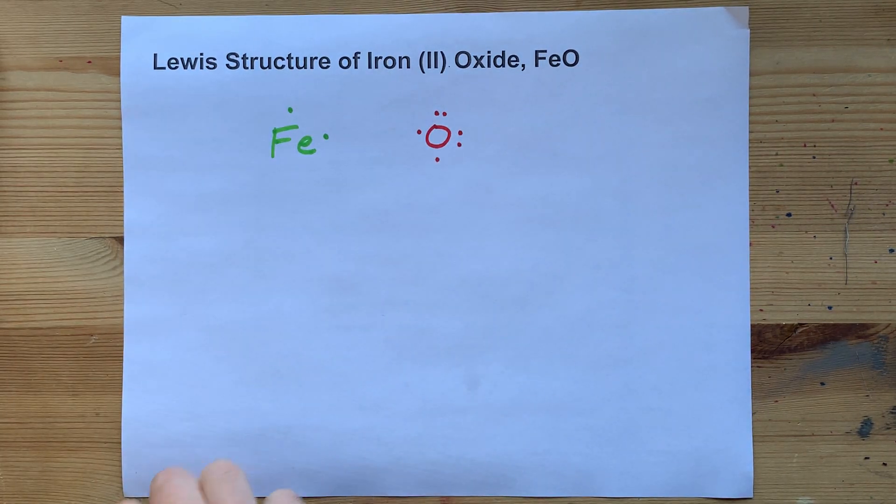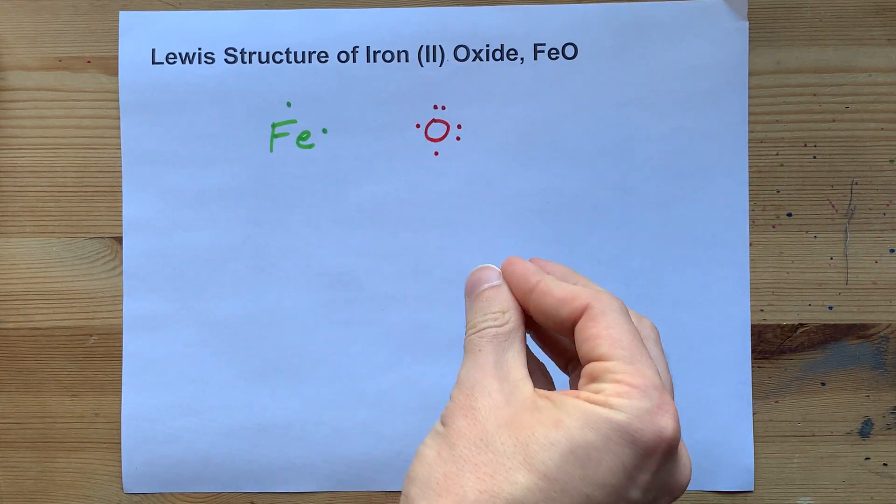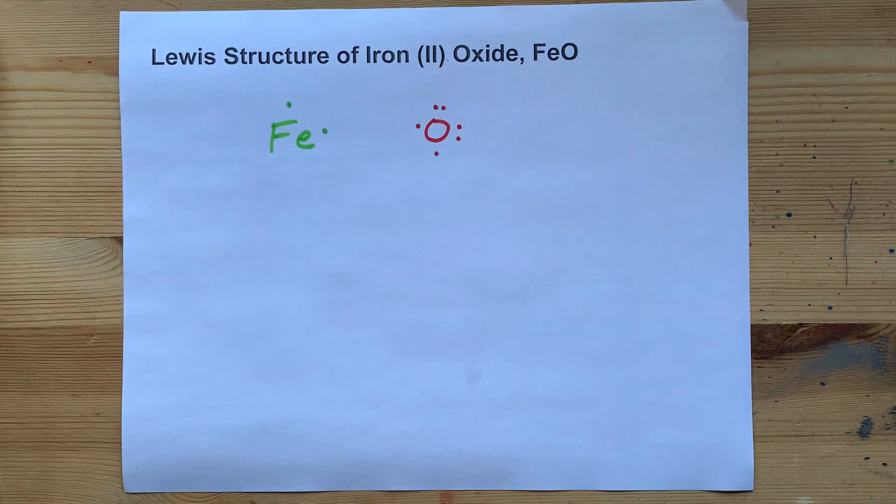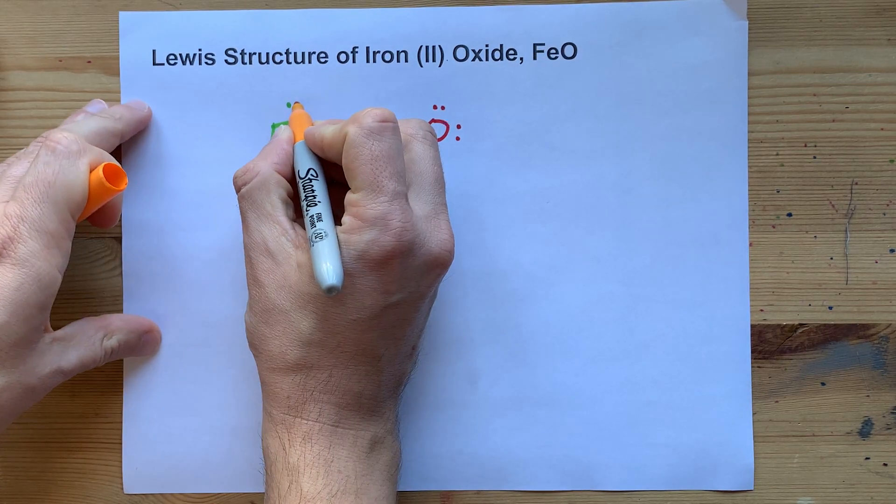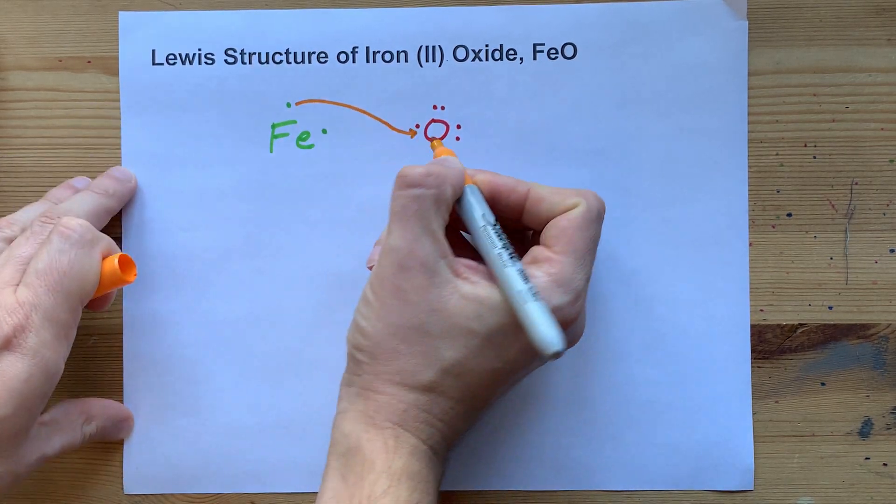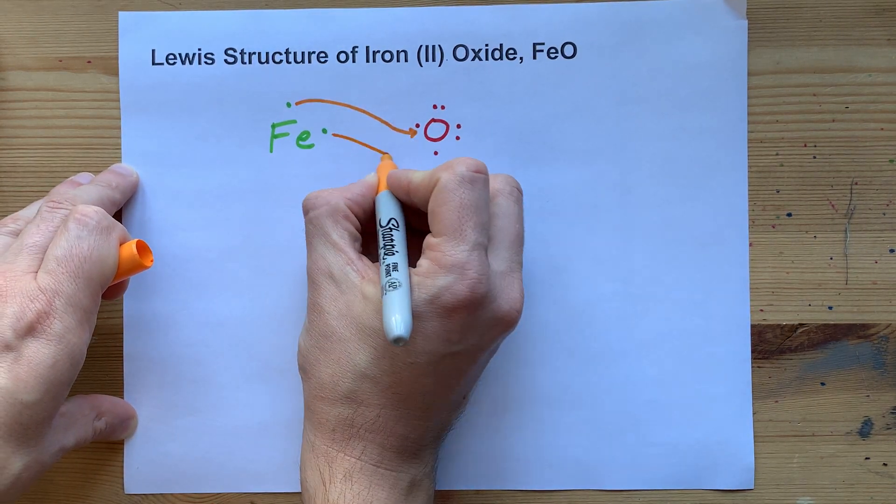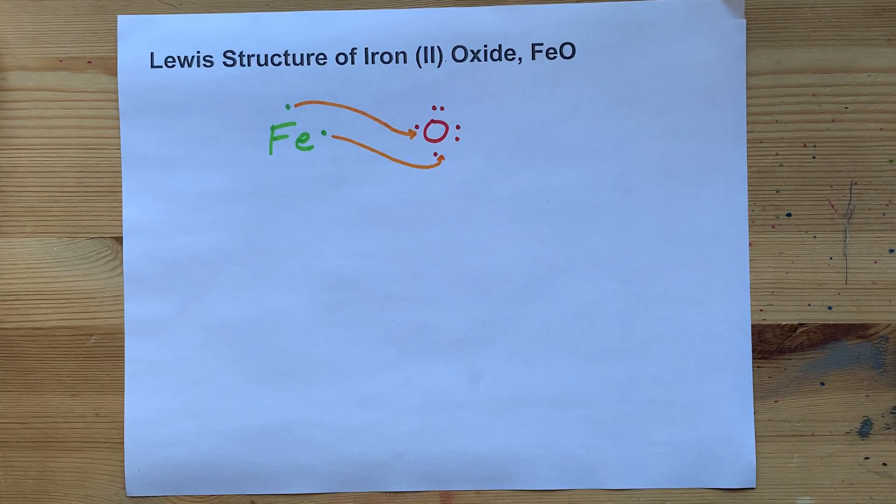Now, to get the full octet, it's going to take electrons away from things with lower electronegativities like metals. So iron gives up one of its electrons to complete this pair of electrons on oxygen. And it gives up this electron to complete this pair on oxygen.